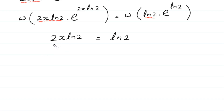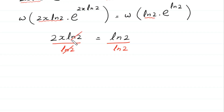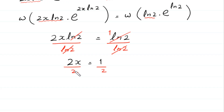We divide both sides by ln 2, so ln 2 cancels on both sides, leaving 2x equals 1. Dividing both sides by 2, we get x equals 1 over 2. This is the value of x and the final answer to this equation.